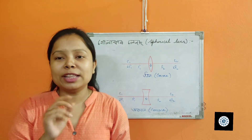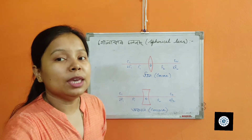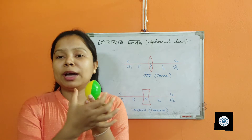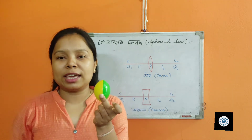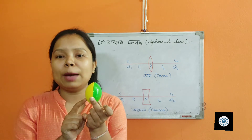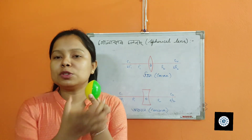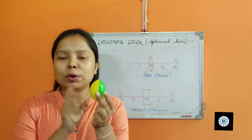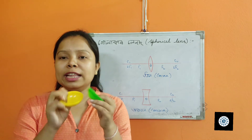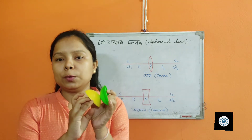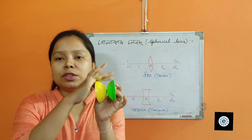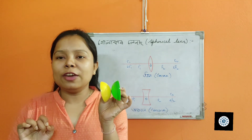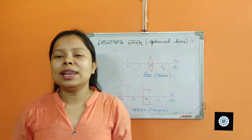A lens is of two types. If the surface of the lens bulges outward, then that lens is called a convex lens. If the surface of the lens curves inward, then that lens is called a concave lens.